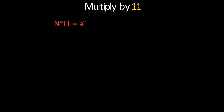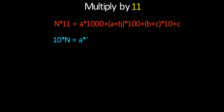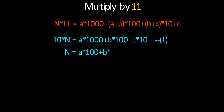When we multiply by 11, our number becomes n times 11 equal to a times 1000 plus (a plus b) times 100 plus (b plus c) times 10 plus c. Let's prove this: 10 times n equals a times 1000 plus b times 100 plus c times 10, and n equals a times 100 plus b times 10 plus c.